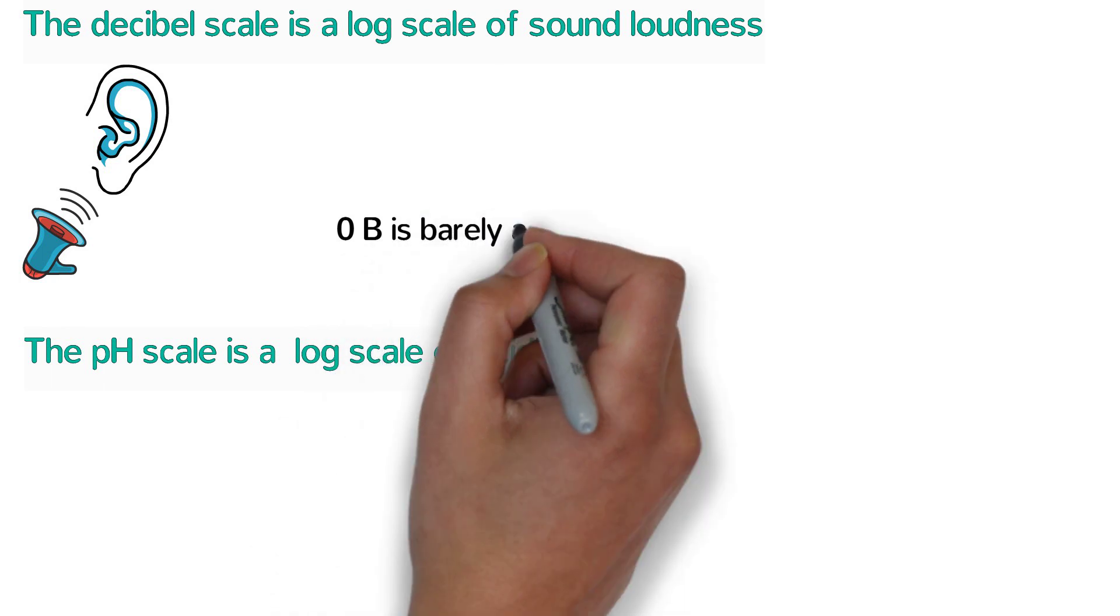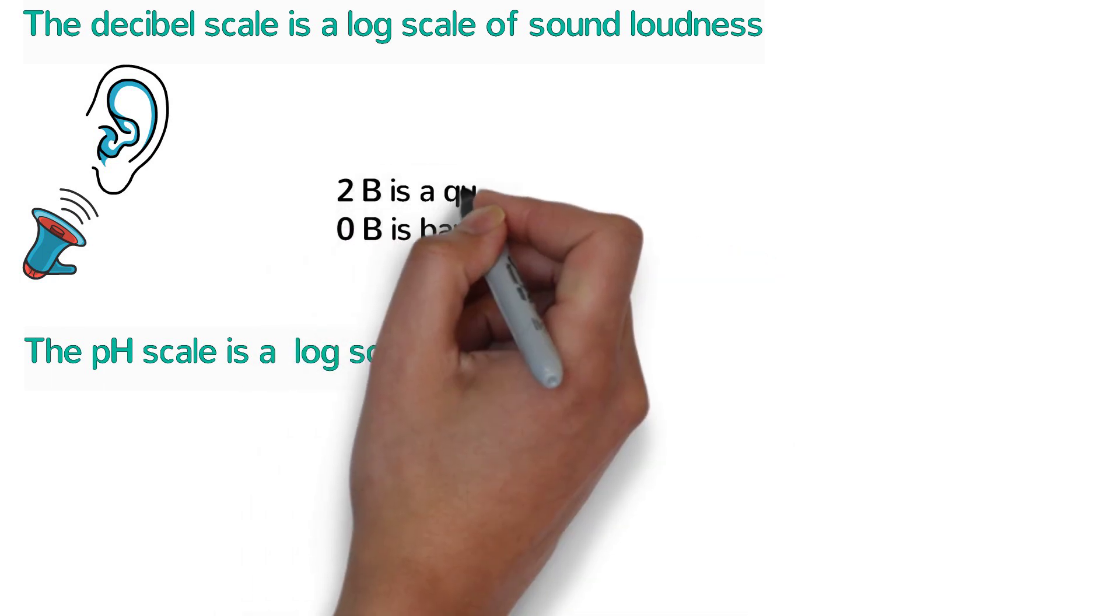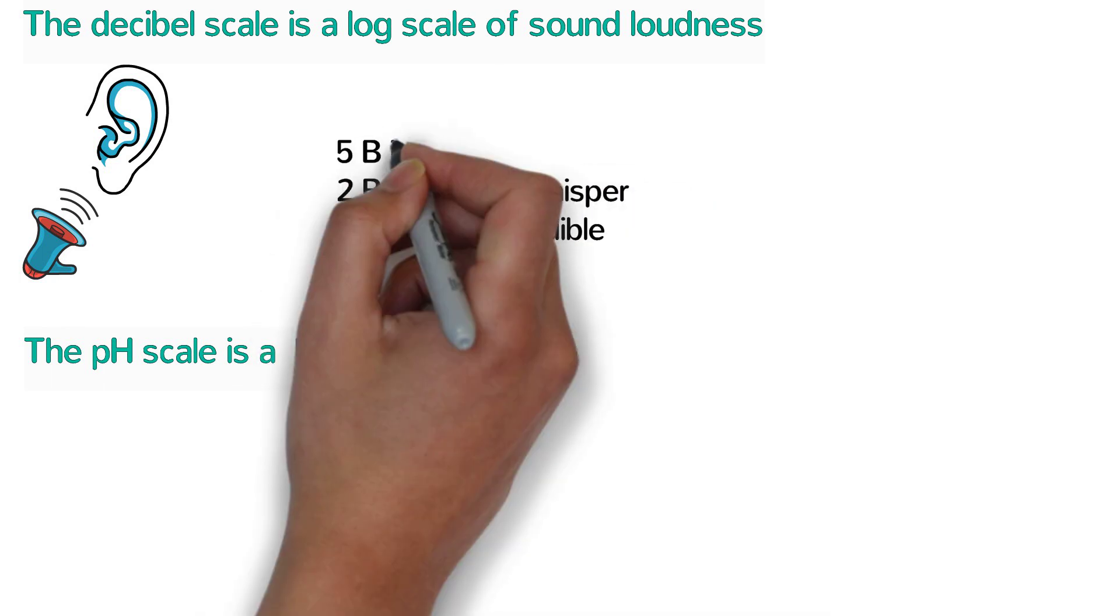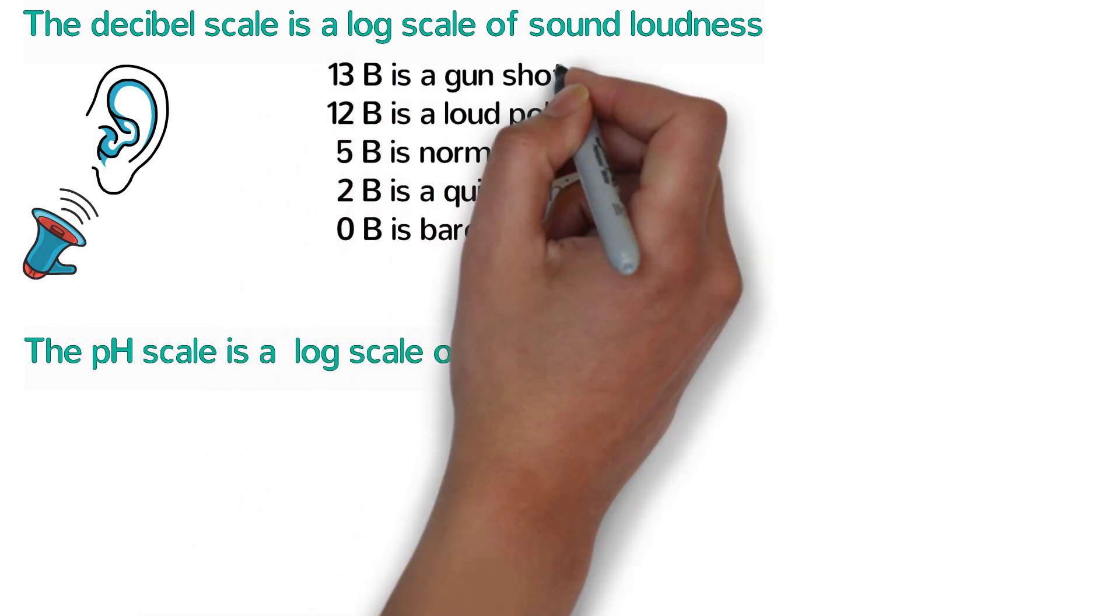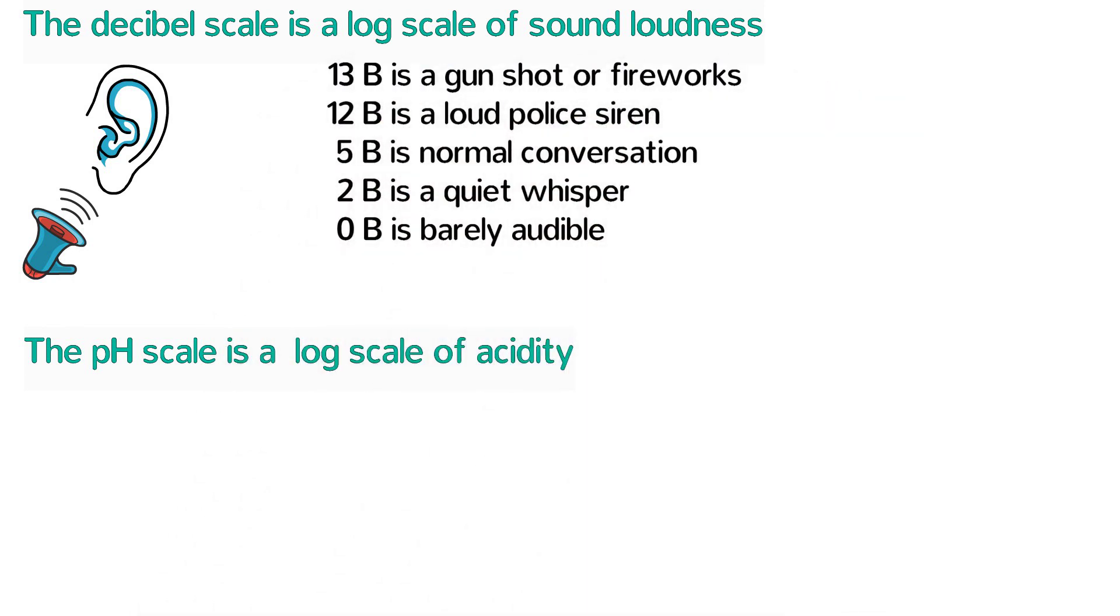Zero bells is barely audible, two bells is a quiet whisper, five bells is normal conversation, twelve bells is maybe a loud police siren, and thirteen bells would be like a gunshot or fireworks, although the loudness of things is highly dependent on how far away they are from you.